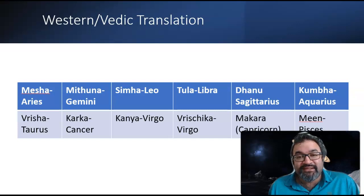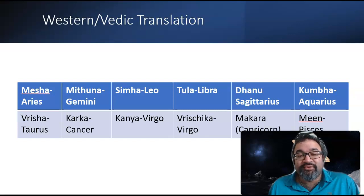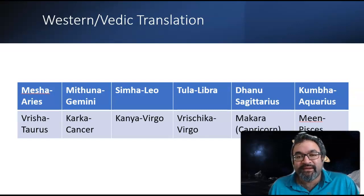Gemini is an interesting sign. Even though I am a Taurus ascendant in sidereal Vedic astrology, in Western astrology I'm a Gemini ascendant. Gemini in Sanskrit is Maithuna or Mituna, which represents the ultimate union between male and female. The symbolism in Vedic astrology strays away from the Castor and Pollux twins symbolism associated with Gemini in Western astrology.